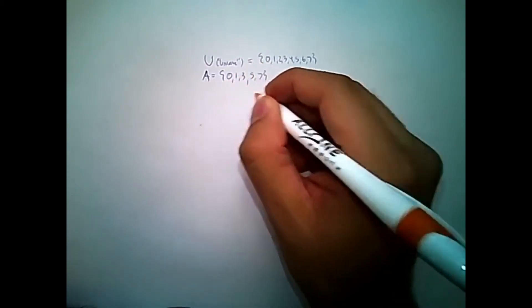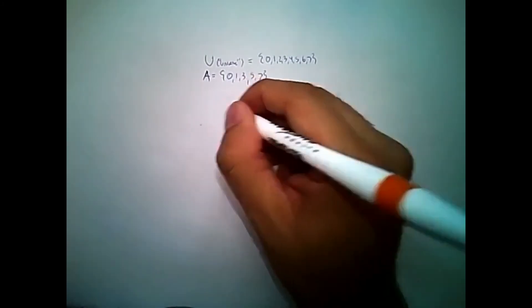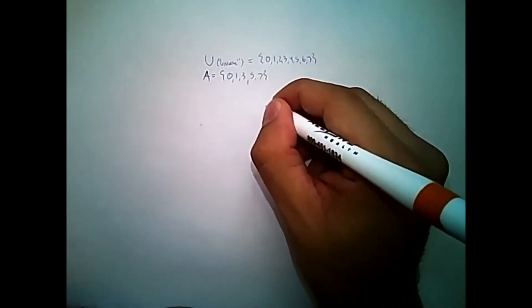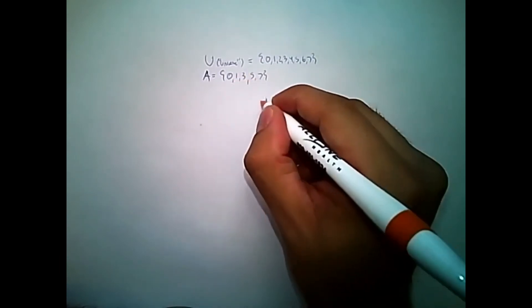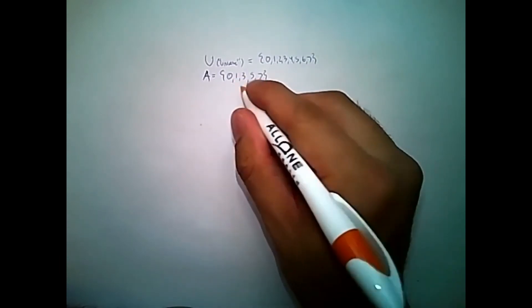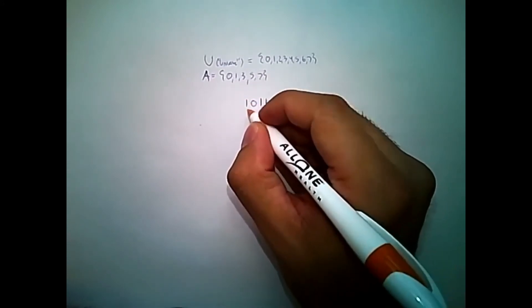0 shows up, so that would be a 1. And depending on your architecture, let's say I've got the least significant digit on the right here. 1 shows up as well, that's a 1. There's no 2 in this set, so that's a 0. 3 shows up, so that gets represented here.